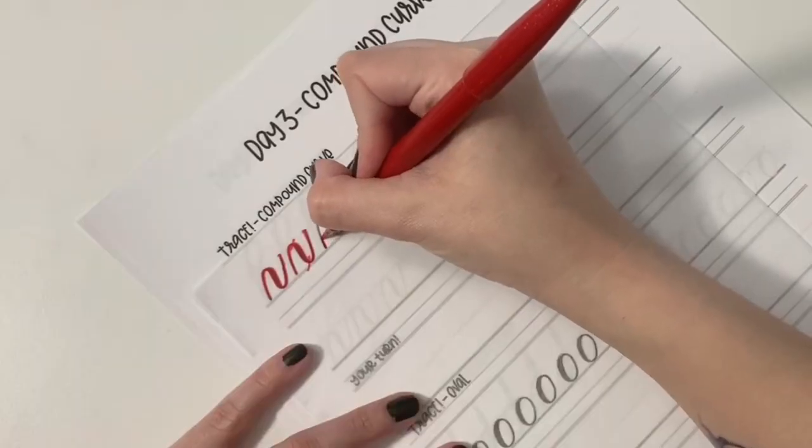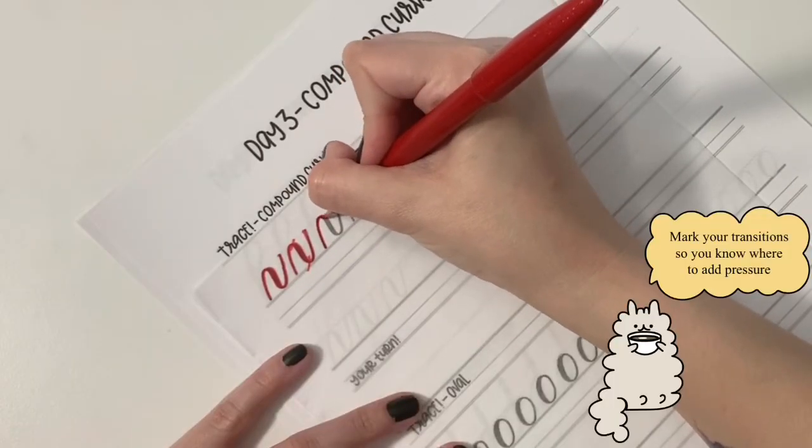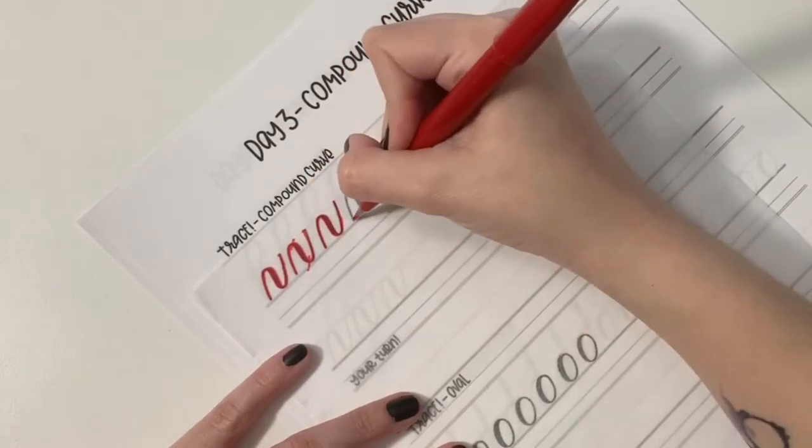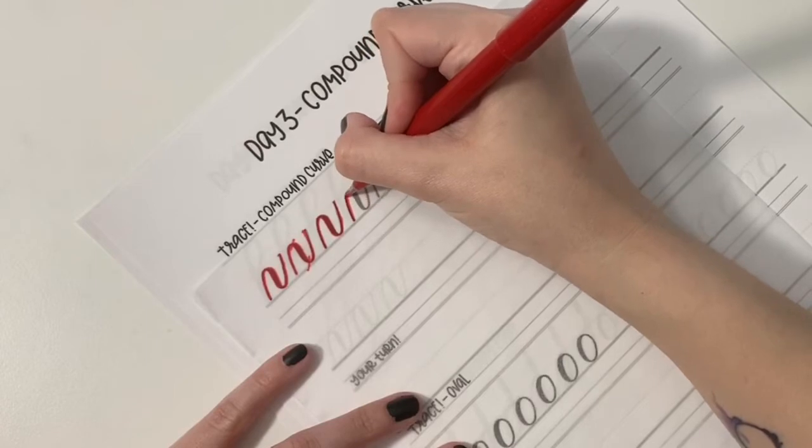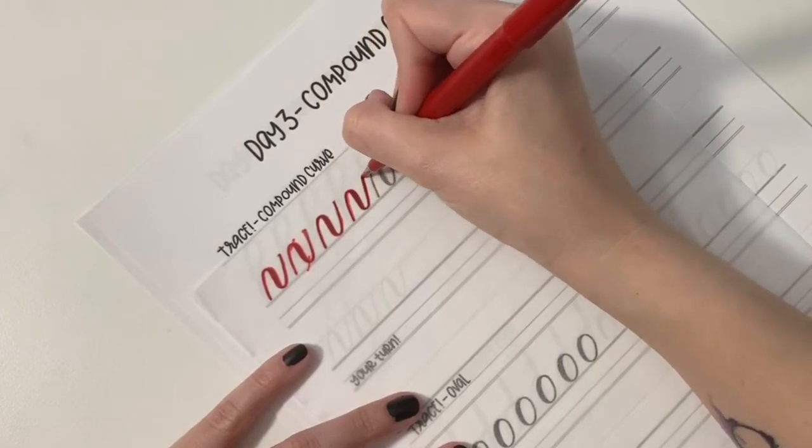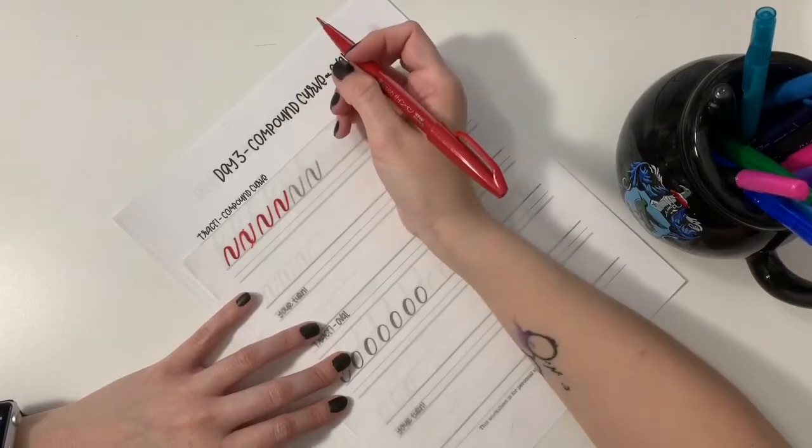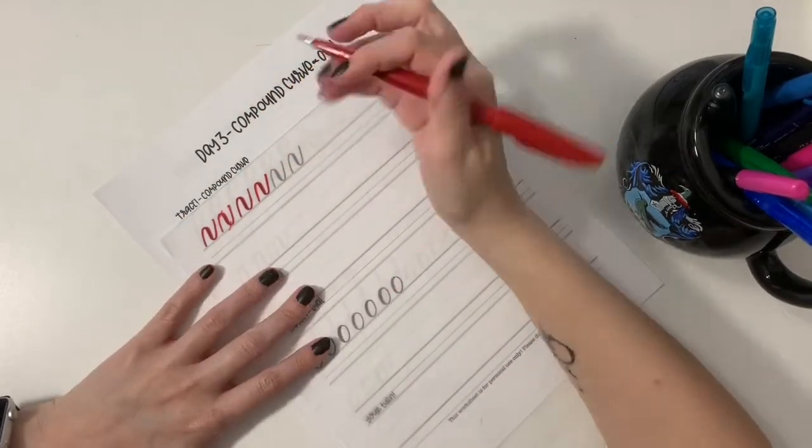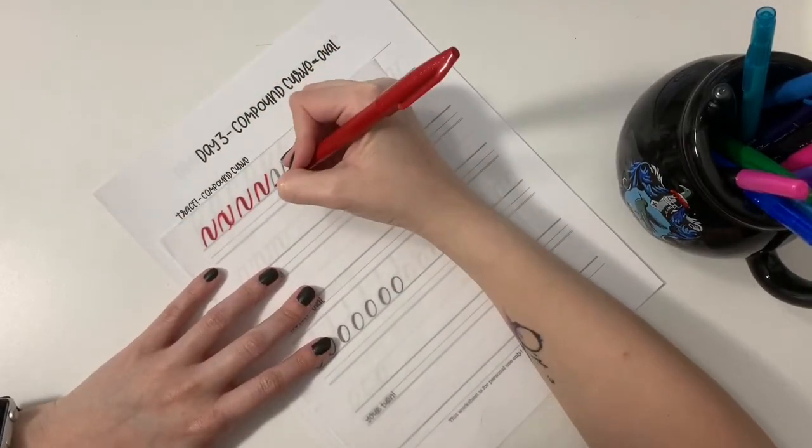So thin, start applying pressure and start letting off pressure. Thin up, apply pressure, let off pressure. And like I mentioned yesterday, you want to draw the stroke in a single movement without lifting your pen off the paper at all. It will be tricky and shaky at first but the more you practice the better you'll get at it.